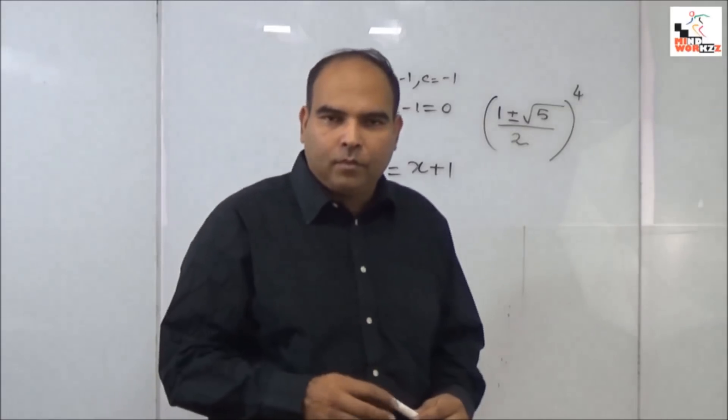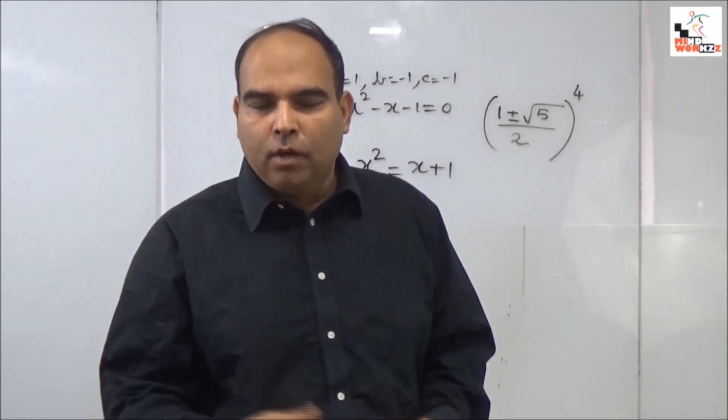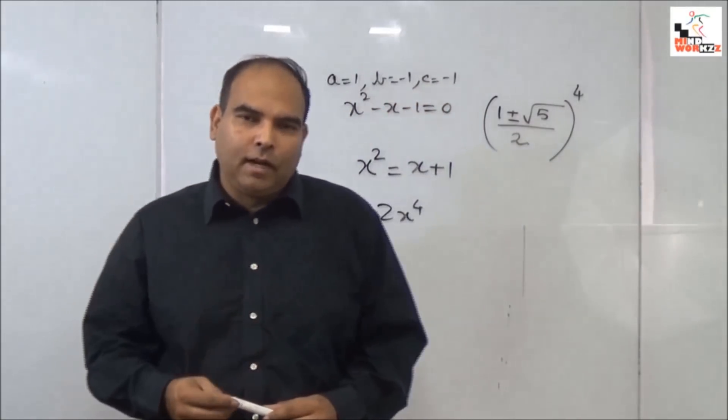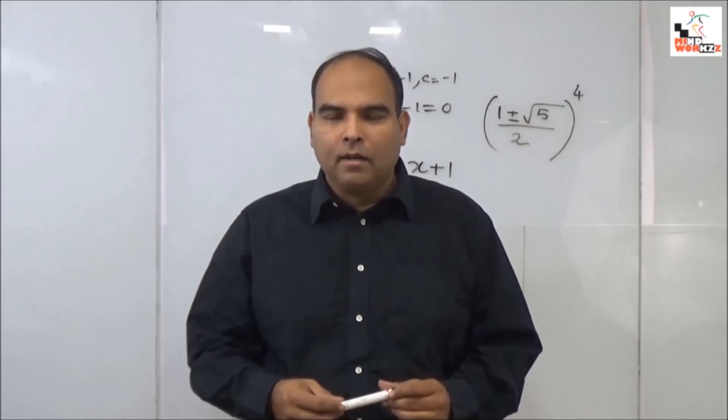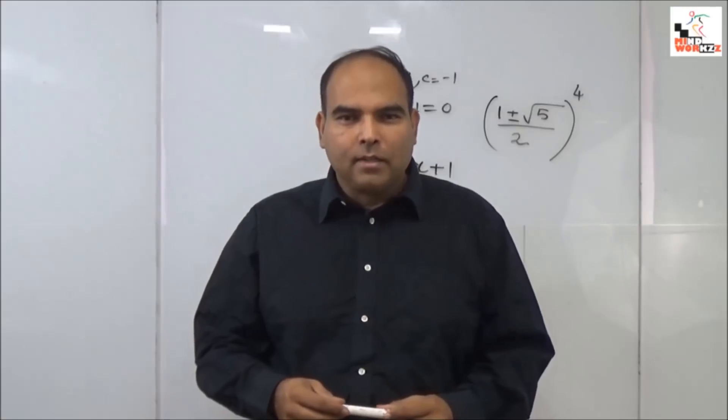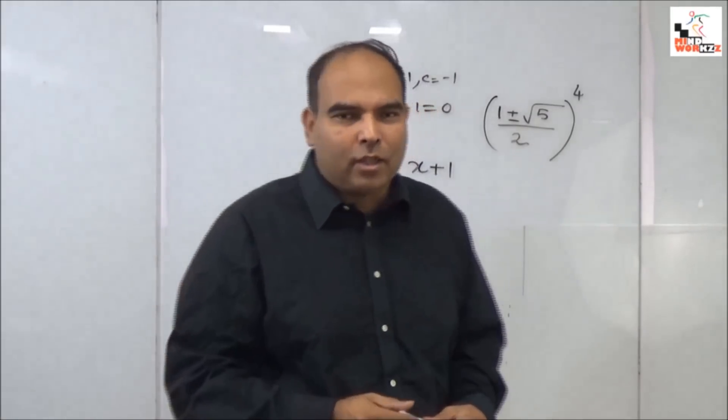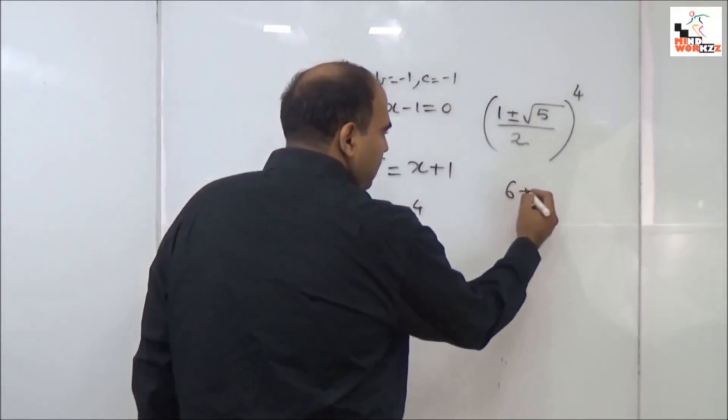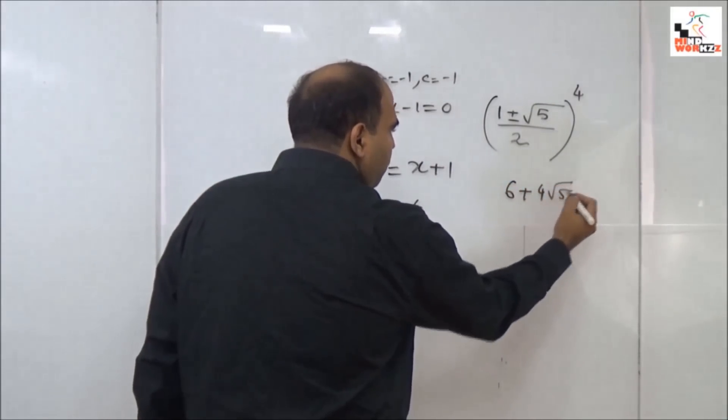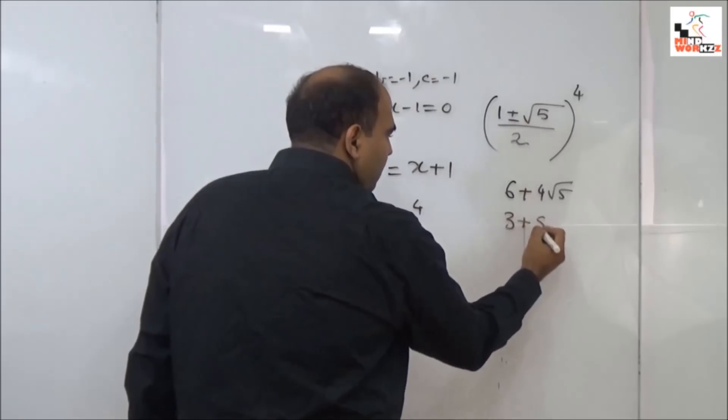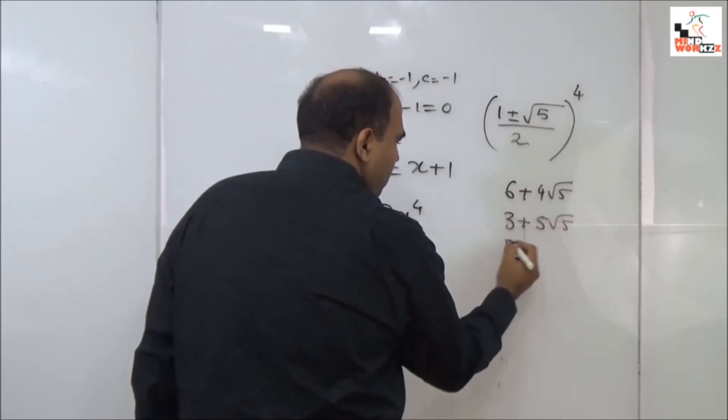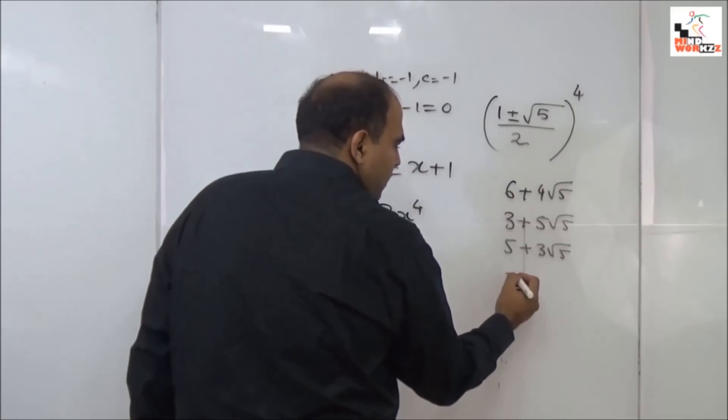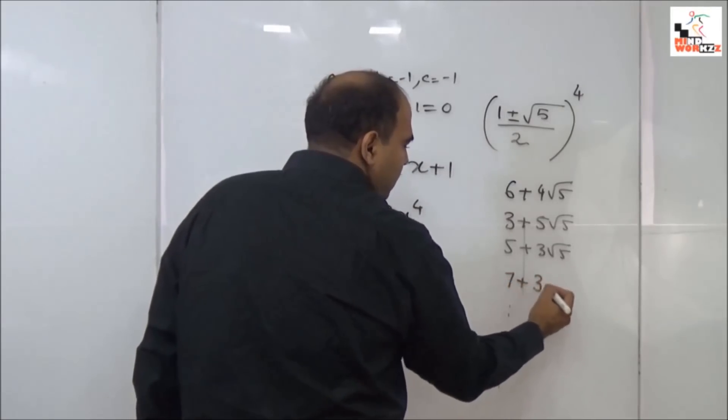That's where I want to show you a different approach to this question. I got this answer when I was doing this question in the CAT in around 30-40 seconds. The options in this question were: 6 + 4√5, 3 + 5√5, 5 + 3√5, and 7 + 3√5.